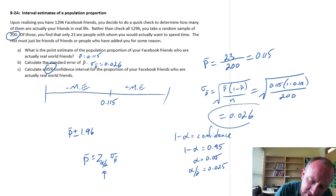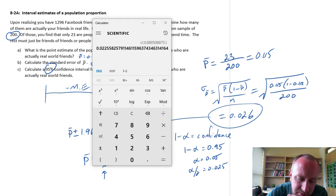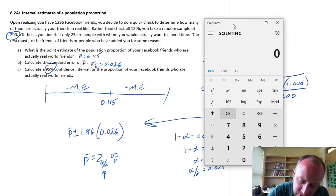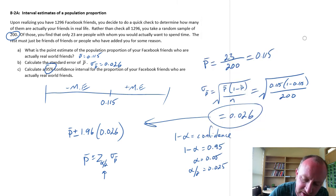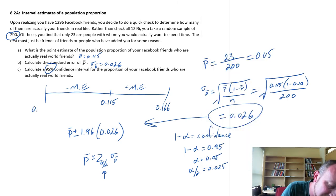And our standard error, well, we've already calculated that, so that can come over here, 0.026. Okay, so now we can go ahead and figure out what those limits are going to be. So this is my point estimate, 0.115 plus 1.96 times 0.026. So that upper limit is, let's call it 0.166. And the lower limit will be 0.115 minus 1.96 times 0.026. So 0.064.